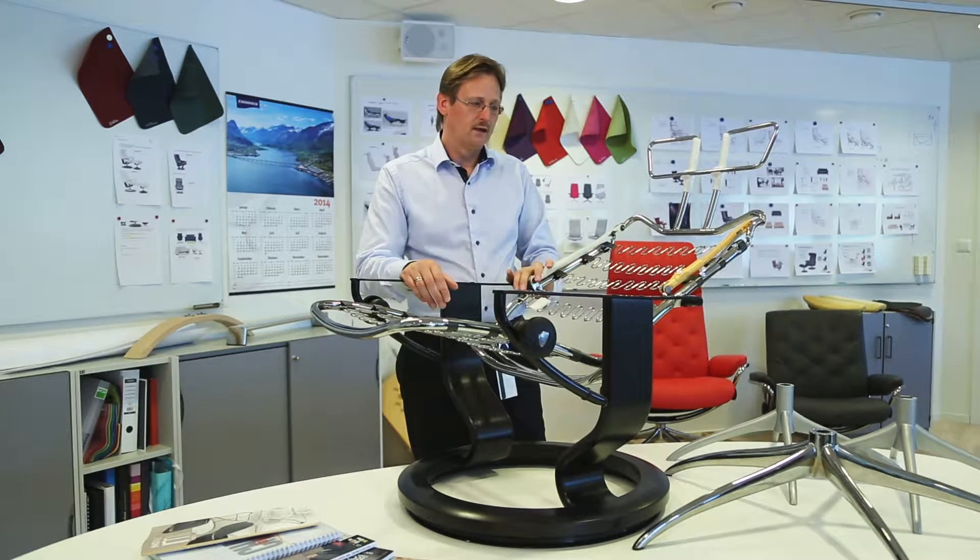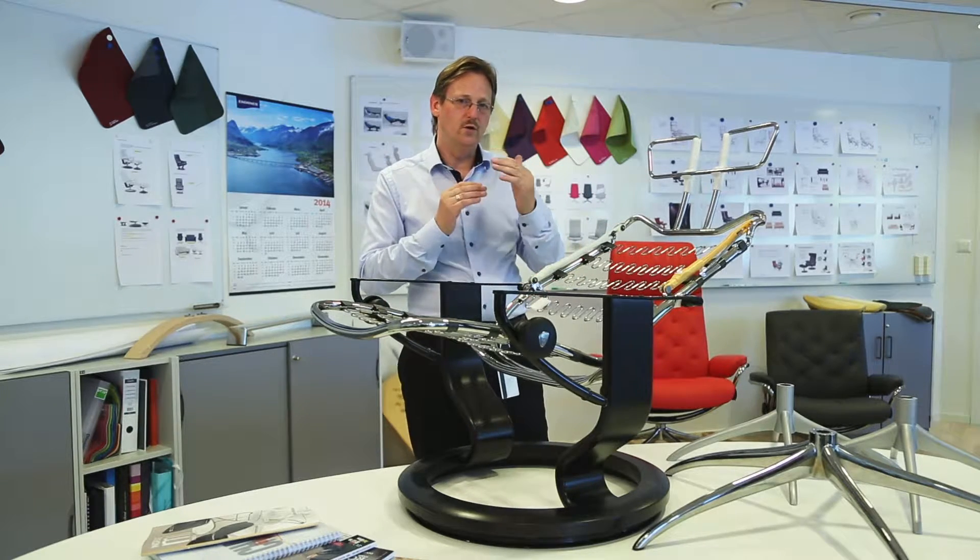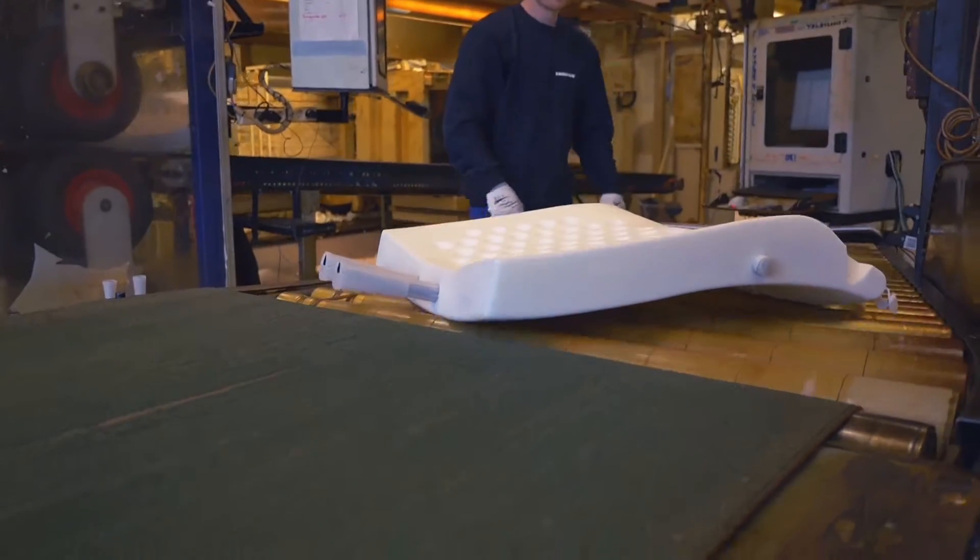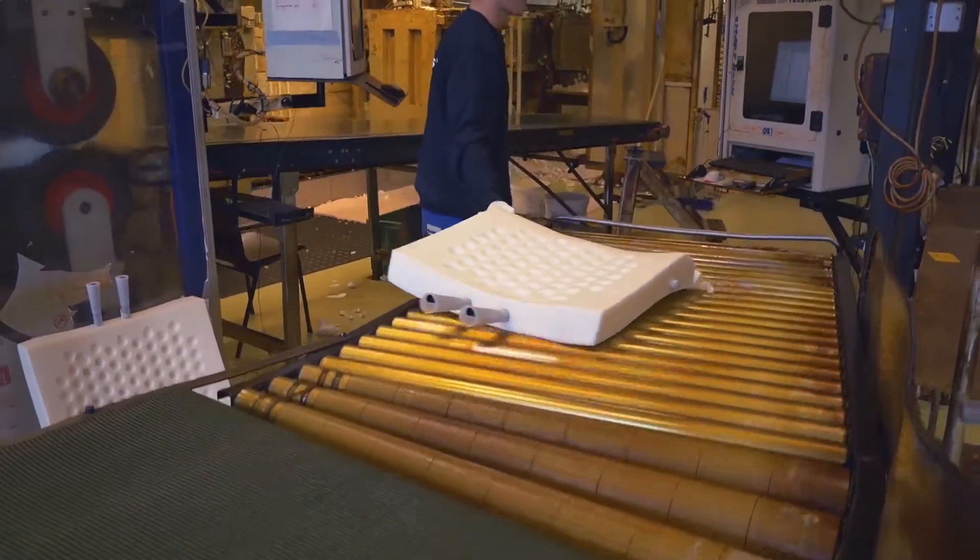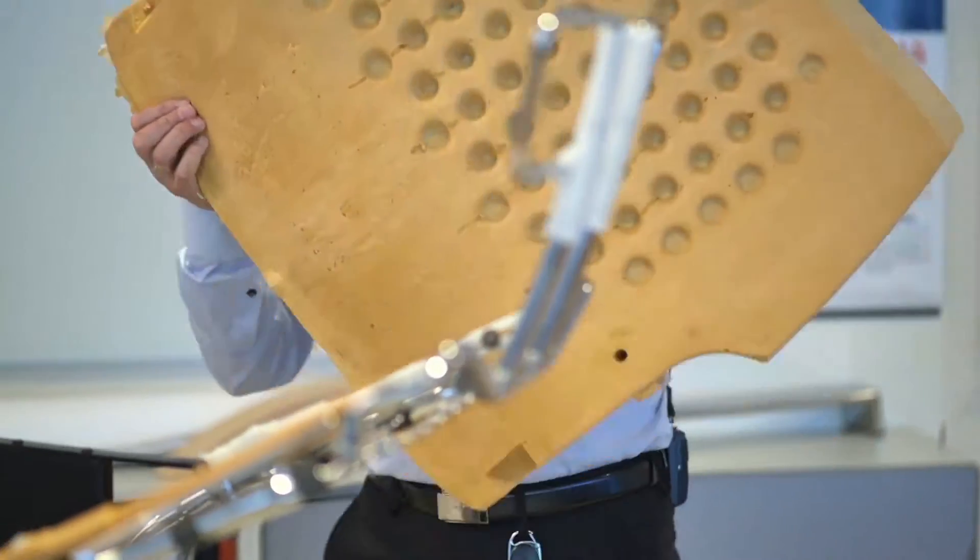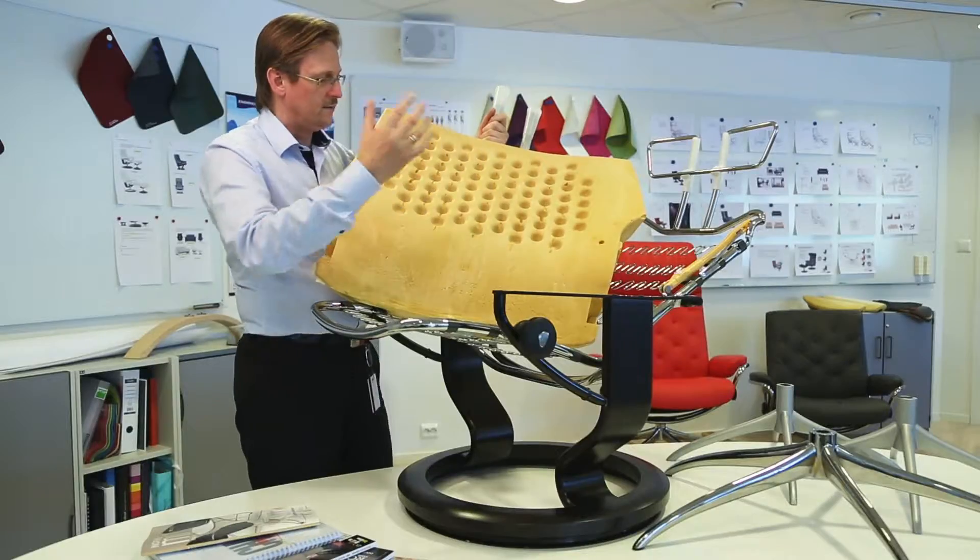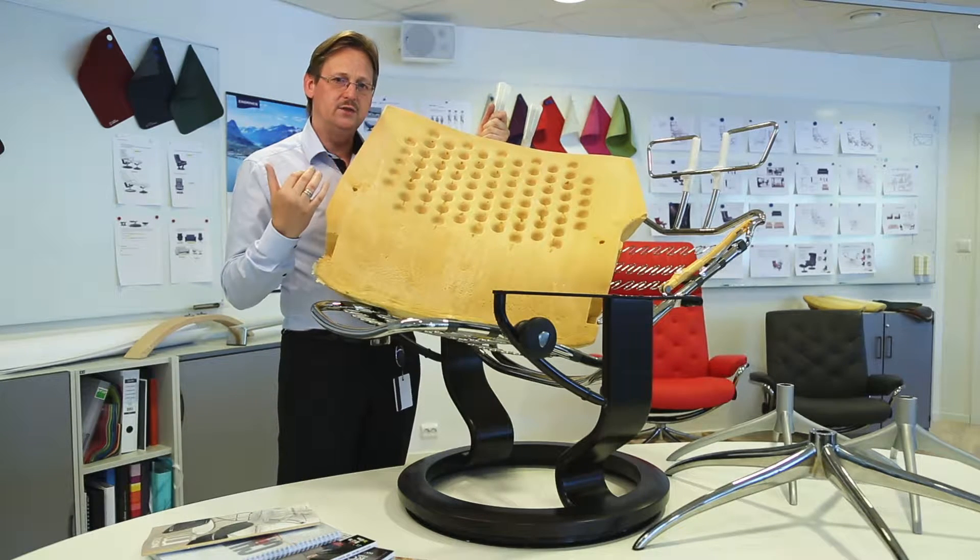It starts from inside. Then we have molded foam, firm molded foam with comfort zones. Just to explain how comfort zones work, you can look at this—you see these different holes in foam that makes you sink deeper into the chair and makes the foam softer.